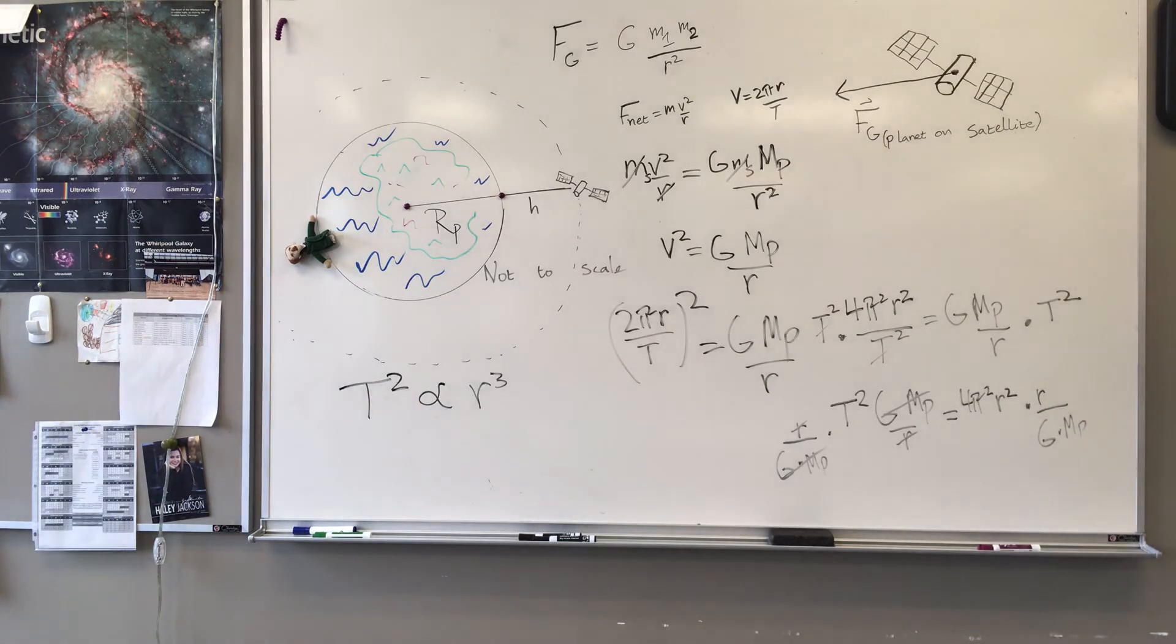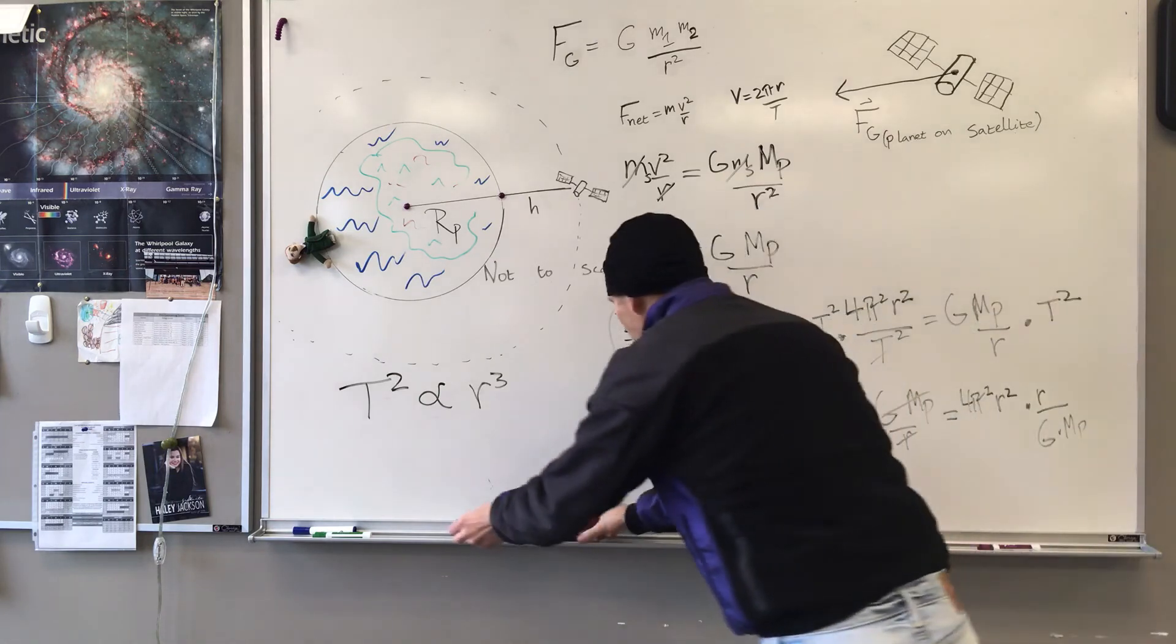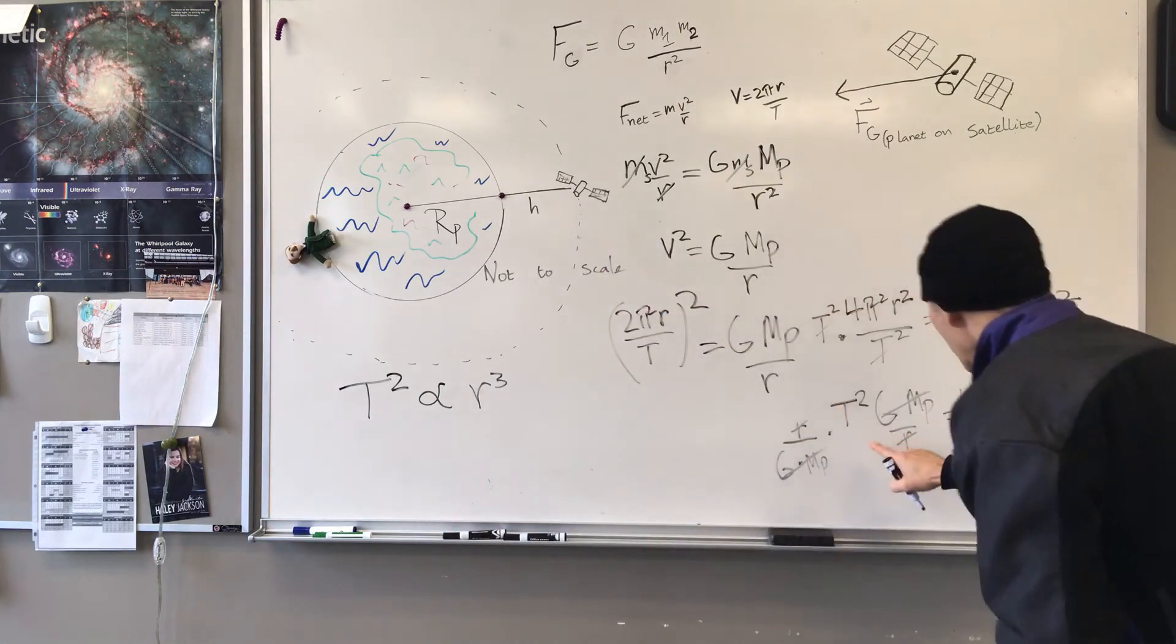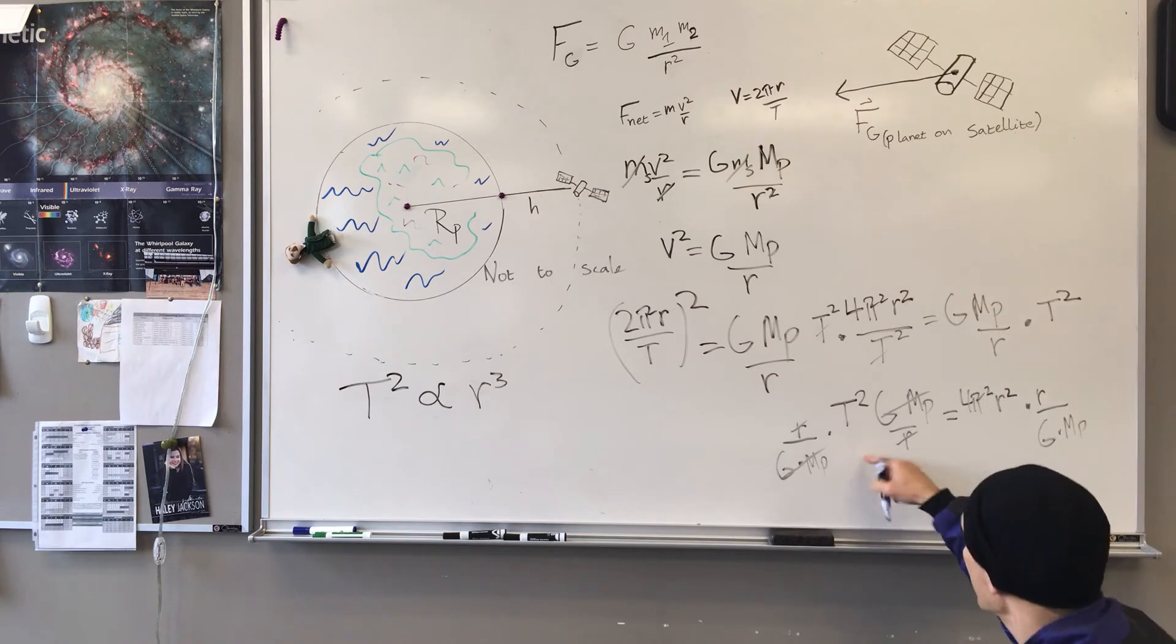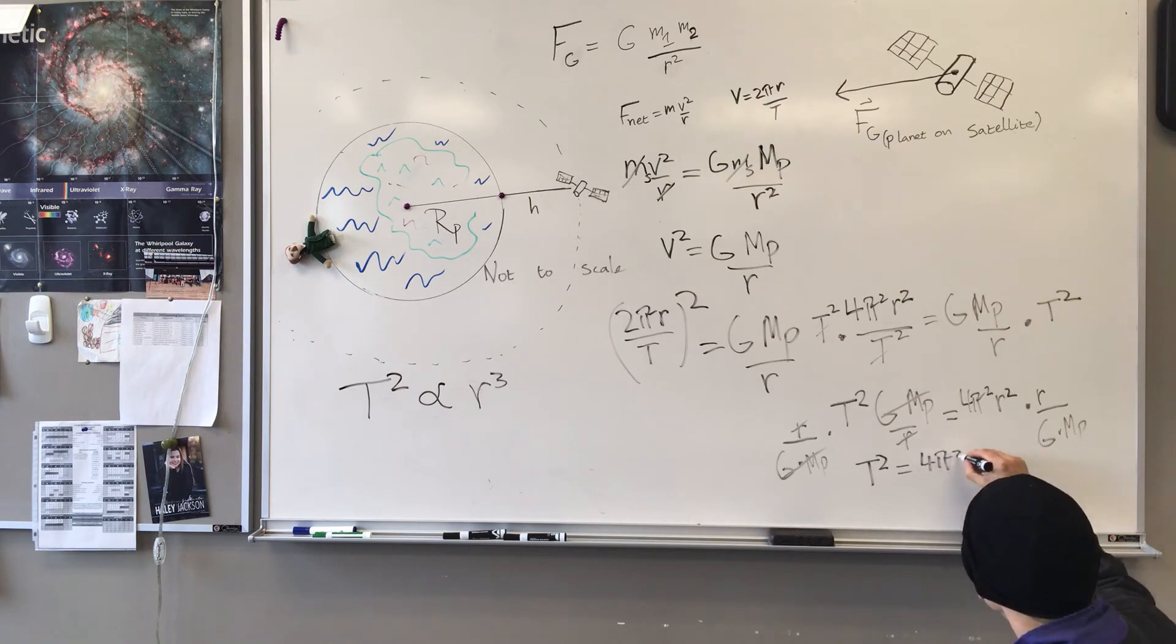Okay, well let's just clean this up. Everything but T squared is divided out on the left. So I have T squared equals 4π squared. On the top I have R squared times R. So there's my R cubed.